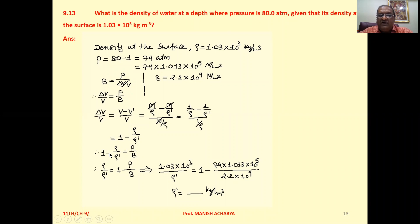So we can write 1 minus rho by rho dash equals P by B. Now rho by rho dash is 1 minus P by B.